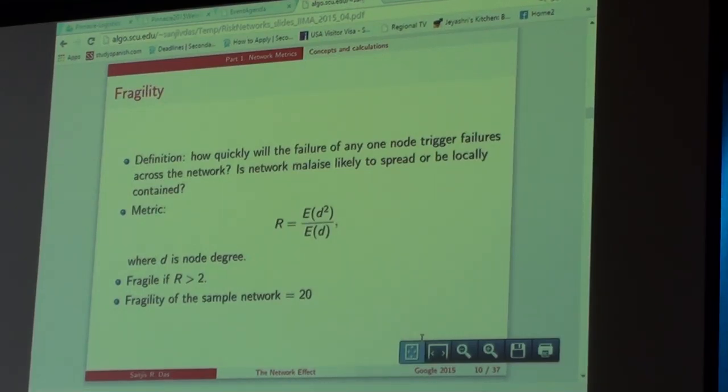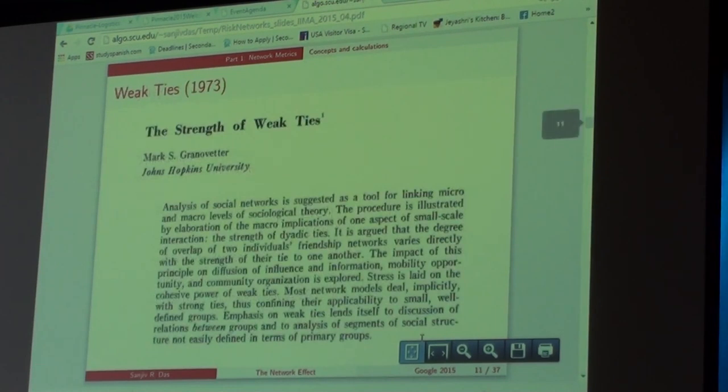So we tend to compute fragility, and it's meaningless right now to you, but when I show you the numbers for the U.S. banking system before the crisis, you'll be surprised to see what that number was when we computed it to figure out if the system was fragile or not.